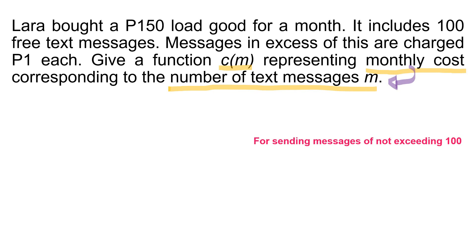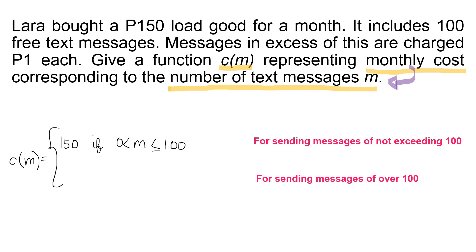For the first case — sending messages not exceeding 100 — monthly cost c of m is equal to 150 if messages sent is greater than 0 but less than or equal to 100. For the second case — sending messages over 100 — monthly cost becomes 150 plus m minus 100, if m is greater than 100.